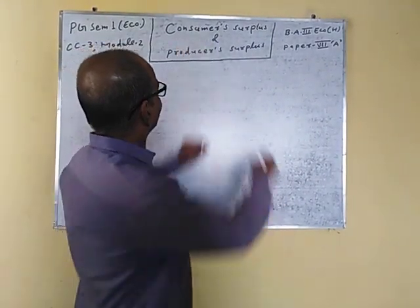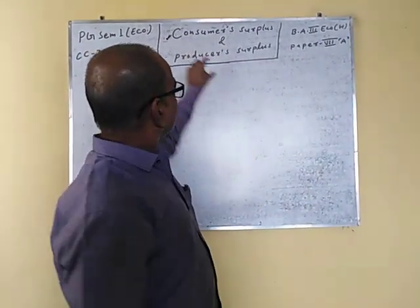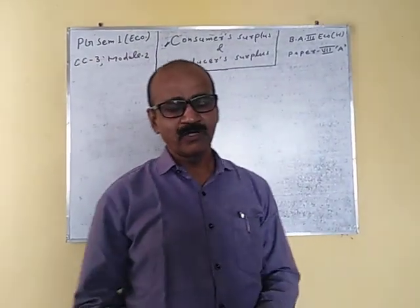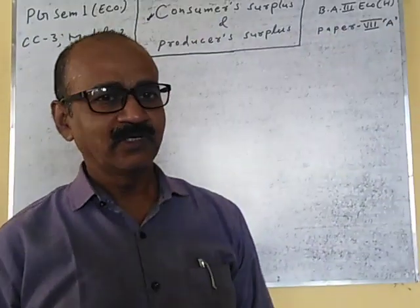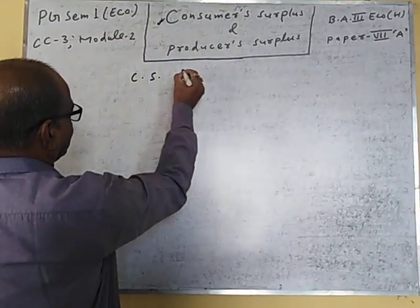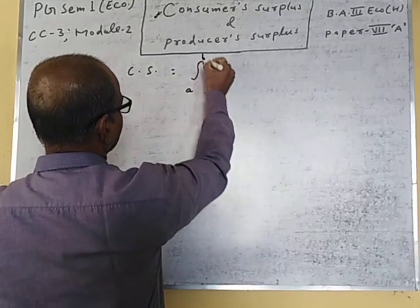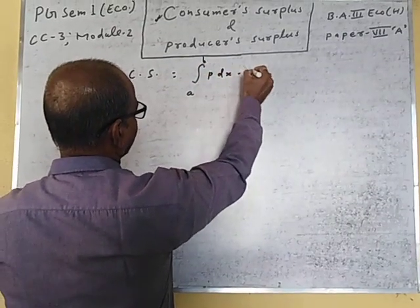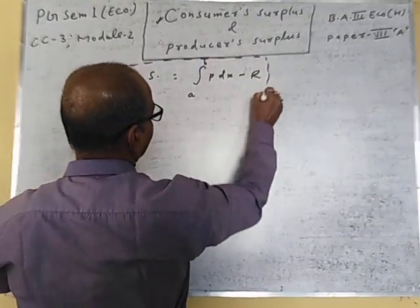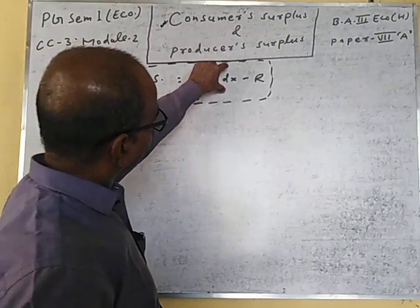First of all, what is consumer surplus? The difference between what we would pay and what we have to pay is called consumer surplus. In mathematical terms, consumer surplus CS is equal to integration with lower limit A to B of P dX minus R.